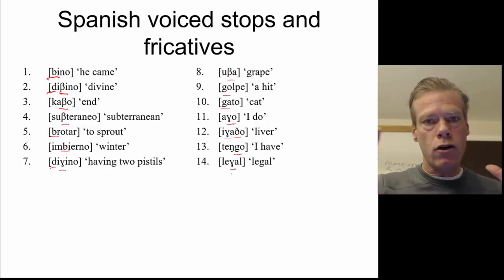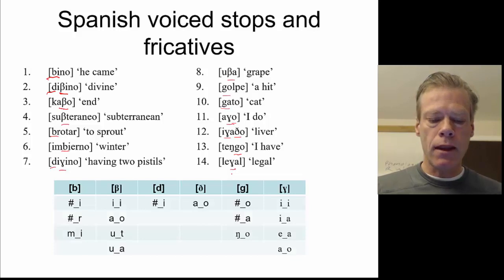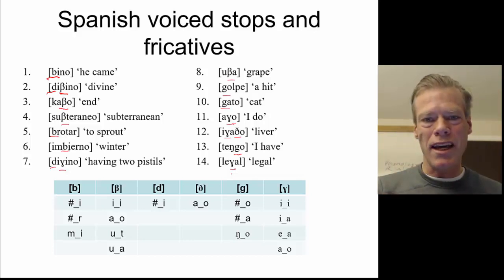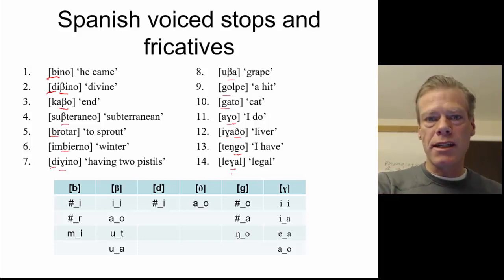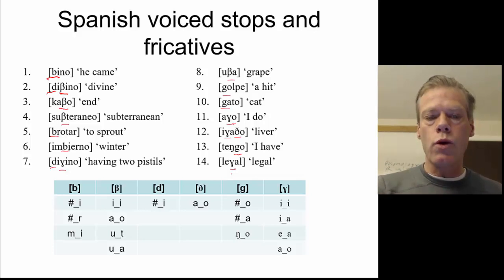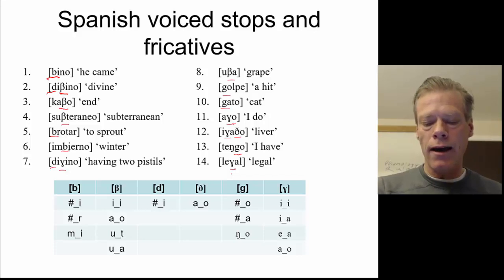Now it's just a matter of listing our environments for each one of those. So our B can begin a word followed by an E, or begin a word followed by an R — that nice Spanish rolled R. And then it can also come in the middle of a word preceded by M and followed by E. Then the V, we see it coming between E and E, A and O, U and T, U and A. D we find only at the beginning of a word followed by E. And Ð we find only following an A and preceding an O.